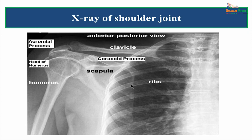A normal x-ray of the shoulder joint — AP view of the right side. You can make out the head of the humerus, the glenoid cavity, the coracoid process, the acromion process, and the clavicle. This is a normal x-ray of the shoulder joint AP view of the right side.